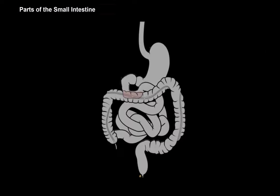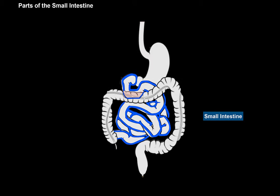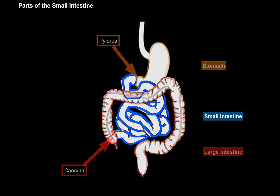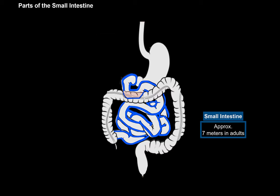Here we see the anterior view of the abdominal cavity. The whole small intestine is highlighted in blue. It reaches from the stomach all the way to the large intestine — or to be specific, it goes from the pylorus of the stomach to the cecum of the large intestine. The length of the small intestine may vary, but in total, if you would stretch it out, it's approximately 7 meters long.